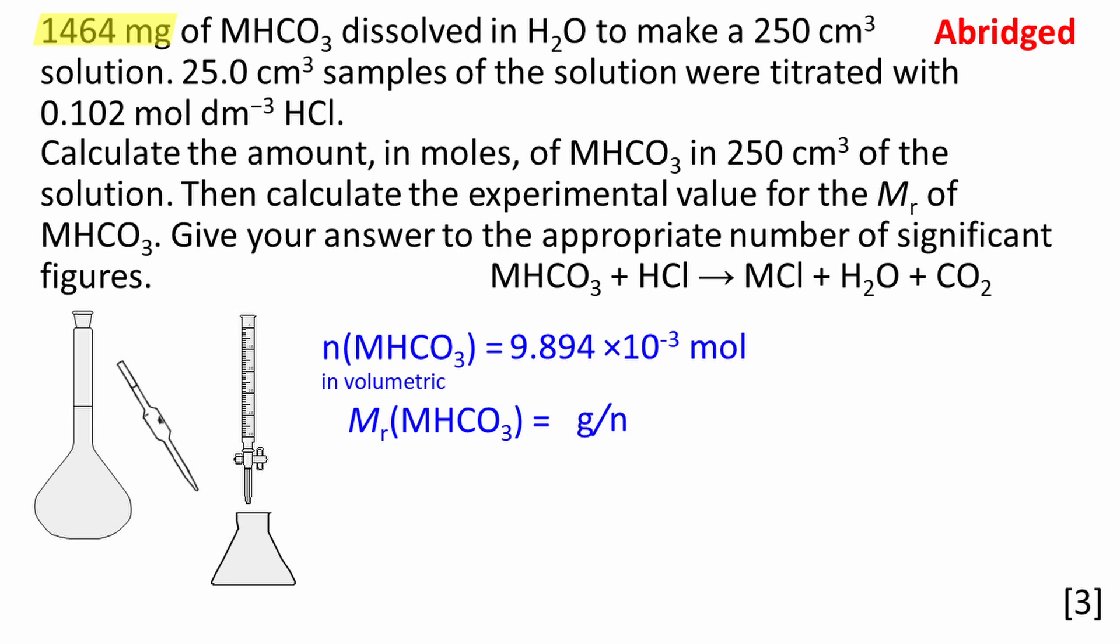The molar mass of the carbonate can be calculated using mass divided by amount in moles. I used lowercase g to represent mass in this equation as a reminder that mass must be expressed in grams. Divide by 1000 to convert from milligrams to grams. The molar mass of the carbonate works out to be 148 g mol⁻¹. The data in the question is given to three significant figures so this final answer should also be three significant figures.